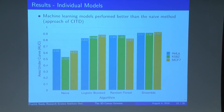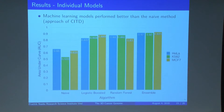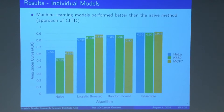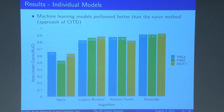Here are results from our individual models. You can see that our logistic, random forest, and ensemble learning models had a very high AUC — area under the curve — which is a performance measure for these machine learning tools. We compared these machine learning models to a naive classifier, which doesn't implement any machine learning and is rather a direct approach similar to CITD, the current gold standard. You can see how our machine learning models outperformed the naive classifier that CITD implements. We focused on the ensemble learning model because it performed the best and had the highest AUC.